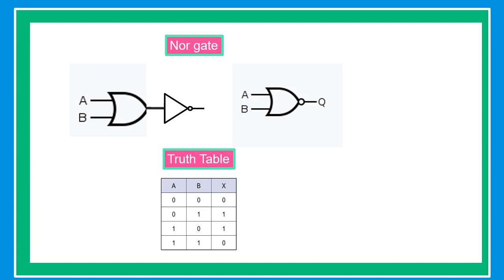When A is 0 and B is 1, the output is 0. When A is 1 and B is 0, the output is 0. And when A and B are both 1, the output is 0.